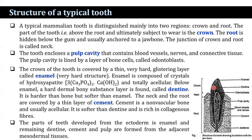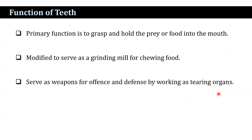Below the enamel, a hard dermal bony substance layer is present known as dentine. It is harder than bone but softer than enamel. The neck and root are covered by a thin layer known as cement. Cement is a non-vascular bone and usually acellular; it is softer than dentine and rich in collagenous fibers. The part of the tooth developed from the ectoderm is the enamel, and the remaining parts — dentine, cement, and pulp — are formed from adjacent mesodermal tissue.